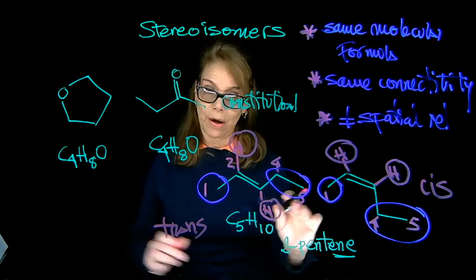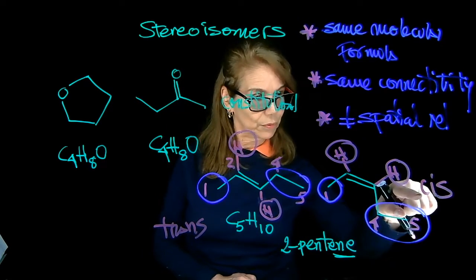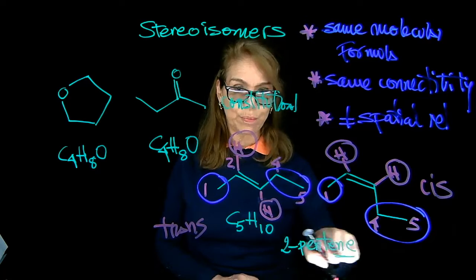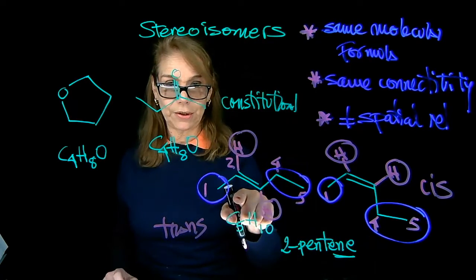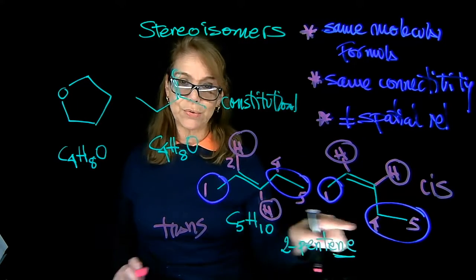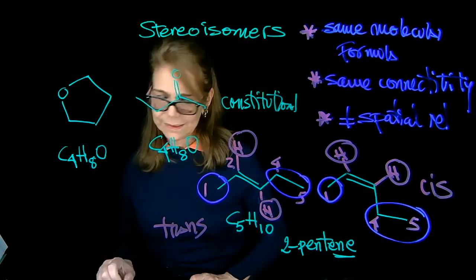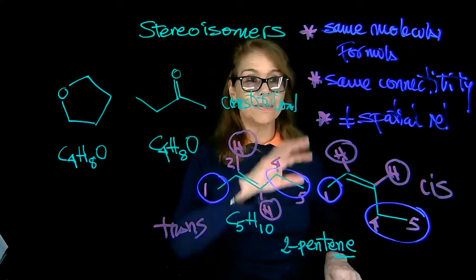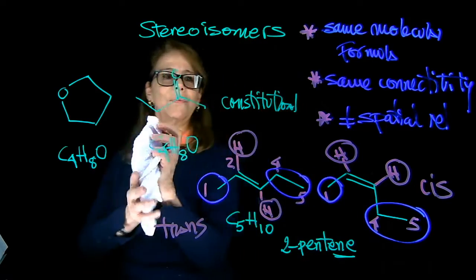And the complete name of the molecule will be, in this case, cis-2-pentene. This molecule here will be trans-2-pentene. And let's do one more example to see. We're doing the checklist and see what they are.